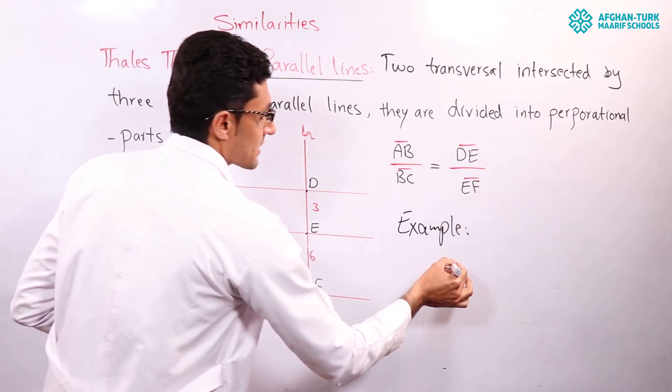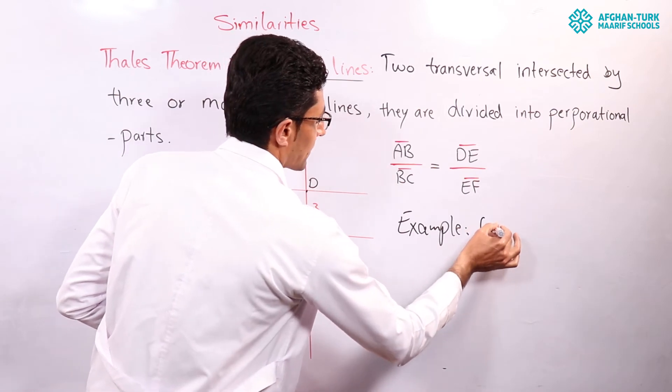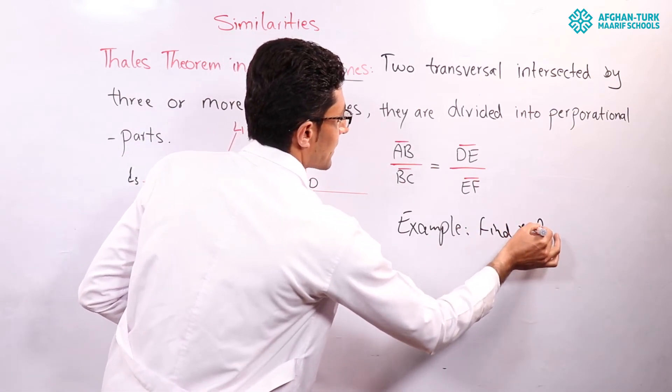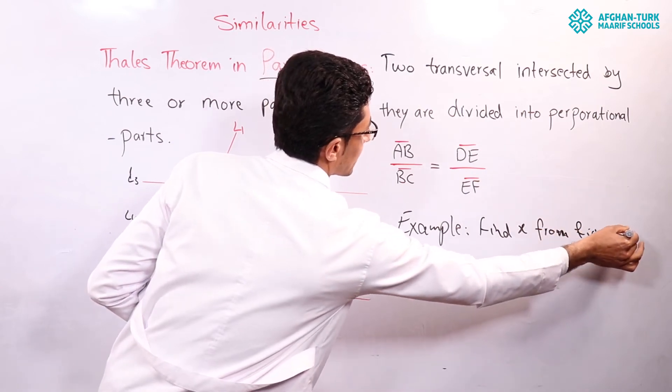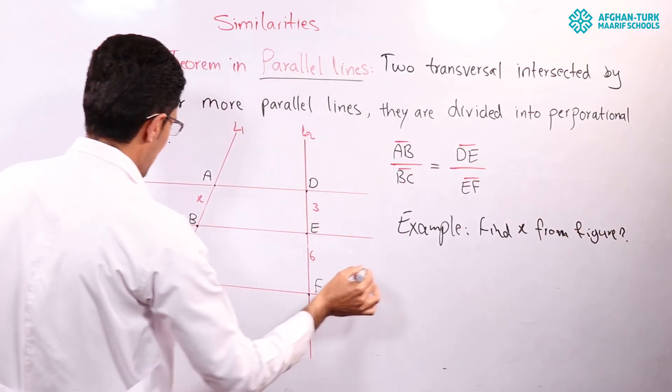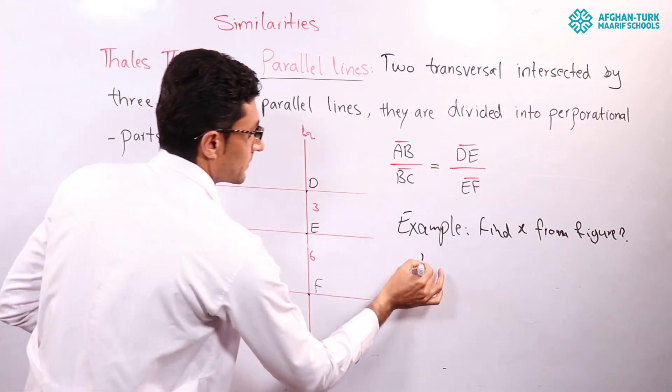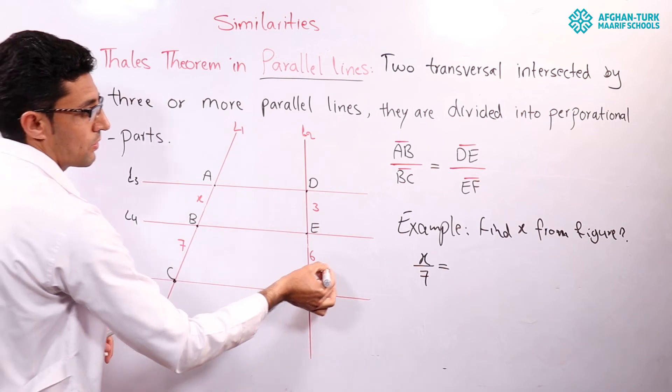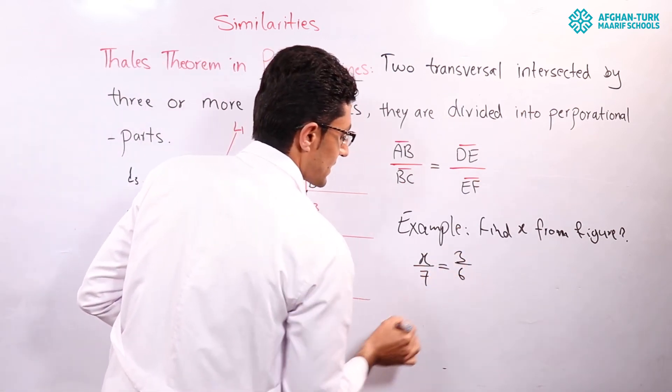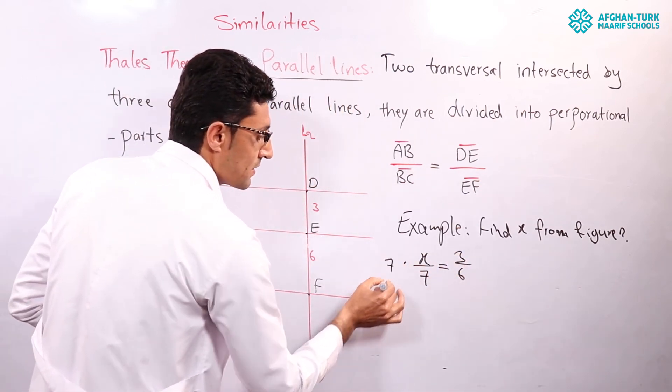X over seven. I can write, find X from the figure. X over seven is equal to what? Three over six. Can I multiply both sides by seven?